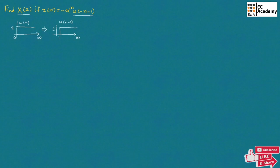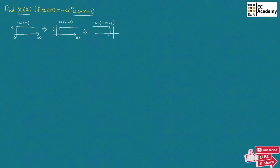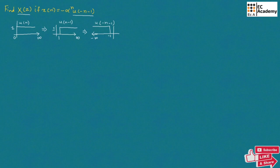Now, let us perform U of minus N minus 1, which means we need to take the mirror image of this waveform. So we will get a waveform like this — it is from minus 1 and it would be up to minus infinity. So this is U of minus N minus 1, which will be having the waveform from minus infinity to minus 1.